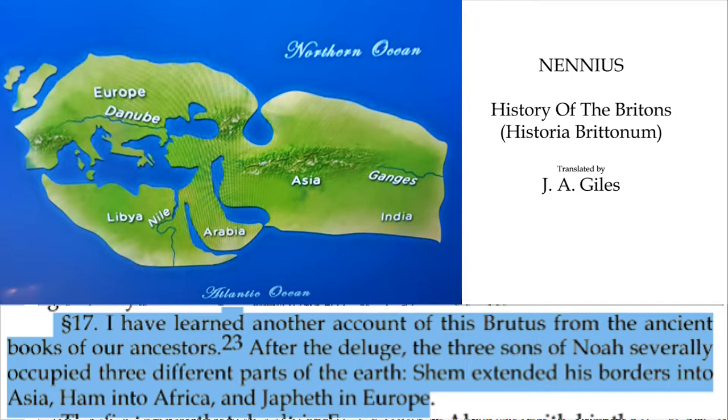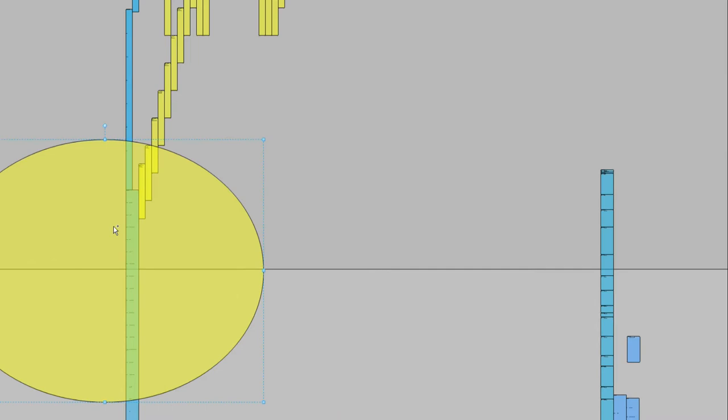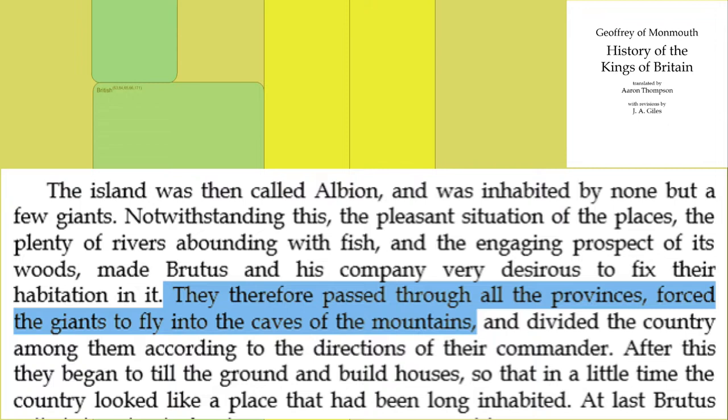When we go back to one of the earliest writers of Britain, we get to Nennius, who writes the Historia Brittonum, talking about the dispersion of Shem, Ham, and Japheth — so we're working with the Japhethic line. We also go into this connection point because the most curious thing is what the text says: when Brutus landed, he saw giants, and it says they therefore passed through all the provinces and forced the giants to fly into the caves of the mountains.